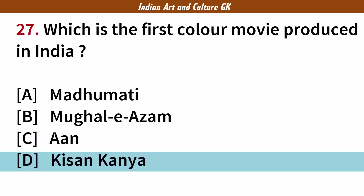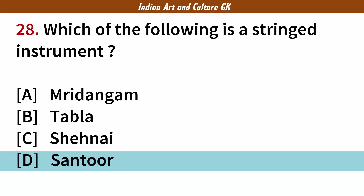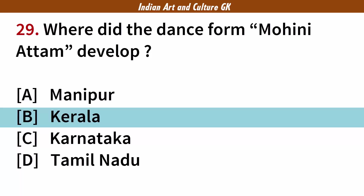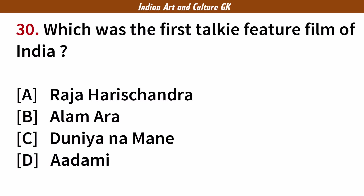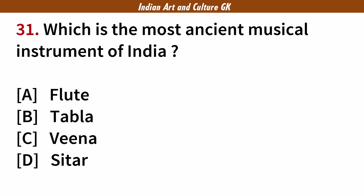Which of the following is a string instrument? Answer: D. Santoor. Where did the dance form Mohini Attam develop? Answer: B. Kerala. Which was the first Talkie feature film of India? Answer: B. Alam Ara. Which is the most ancient musical instrument of India? Answer: C. Veena.